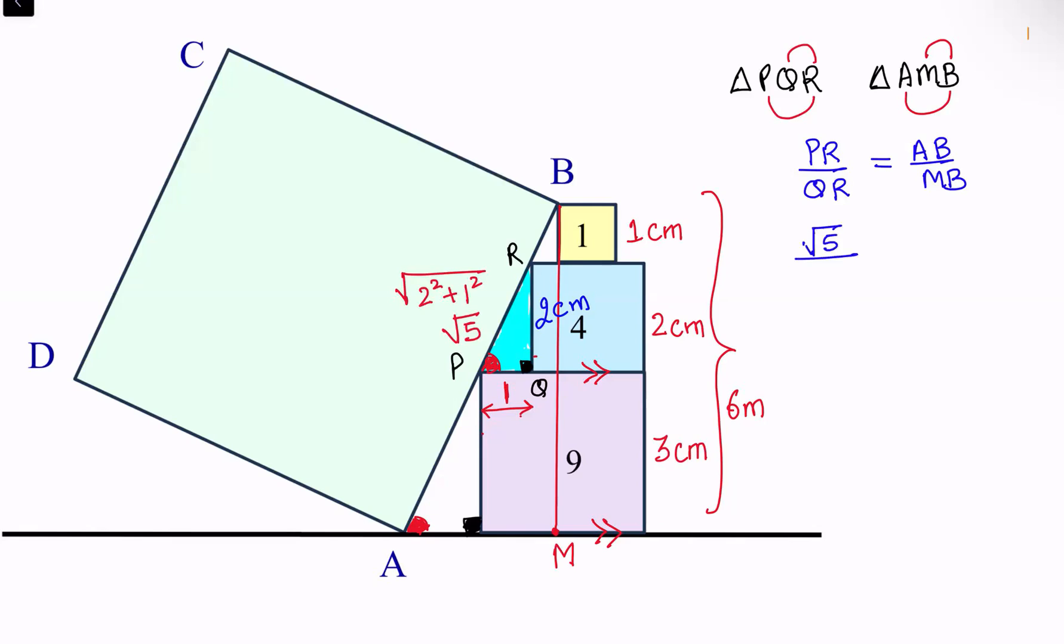QR is 2, AB is what we need to find, upon MB which is 6. Solving, we get AB is 3√5. The area of the square is (3√5)², which is 9 times 5, or 45 cm². And that's our answer.